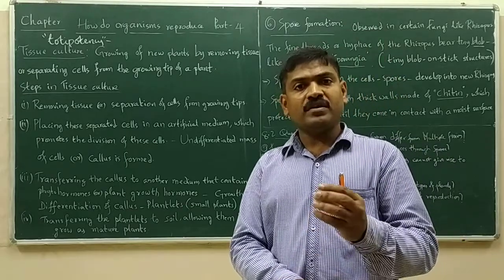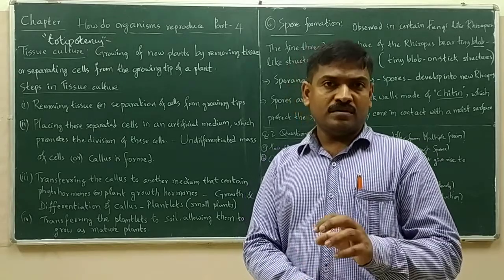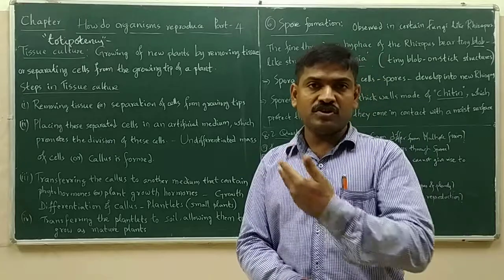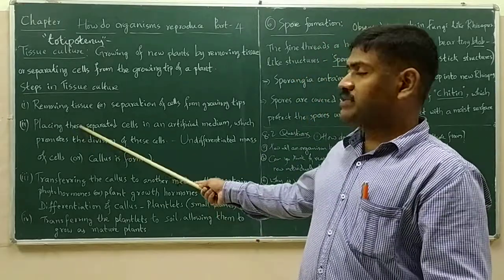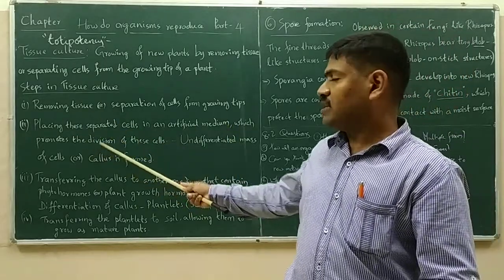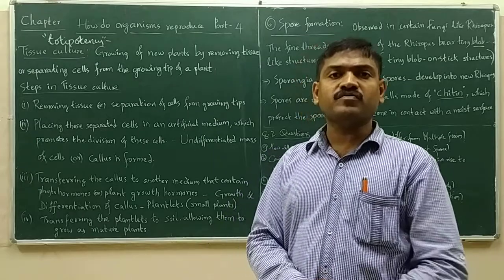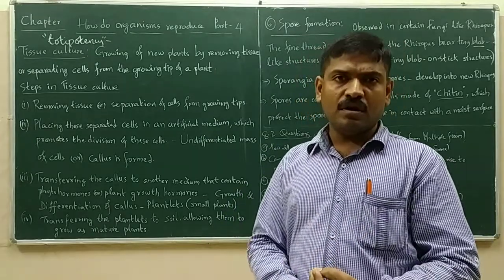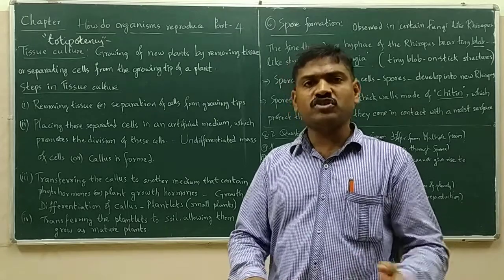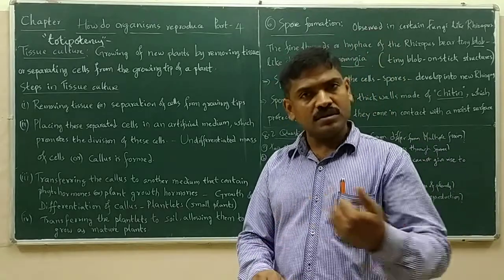Then, transferring these separated tissue or cells to an artificial culture medium. The culture medium is prepared using various types of nutrients — which provide various mineral elements — for the cell division and growth of the plant cells separated from the growing tips. Placing these separated cells in an artificial medium promotes their division, forming an undifferentiated mass of cells.